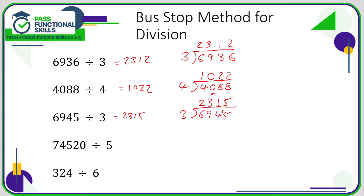So when there's a remainder — like 4 divided by 3 is 1 with a remainder of 1 — the remainder gets parked onto the next number along. Let's have a look at the next example: 74520 divided by 5.